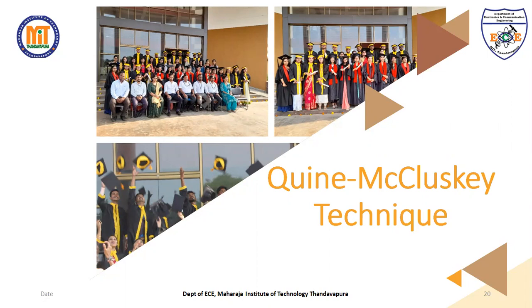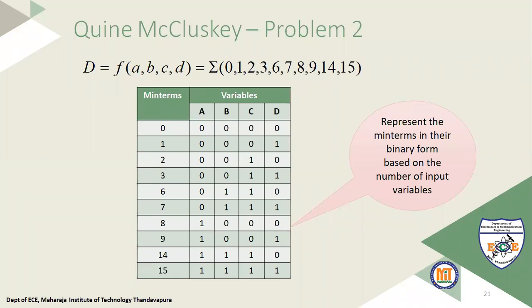Welcome back to this video lecture series on Digital System Design. In the last class we were discussing the Quine-McCluskey technique. In this session we'll be looking at the second example of the Quine-McCluskey method. The given problem is: solve the following using the Quine-McCluskey technique. The expression is D = f(a, b, c, d) = Σ(0, 1, 2, 3, 6, 7, 8, 9, 14, 15).